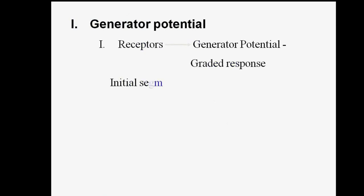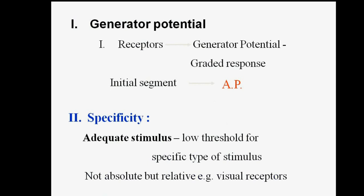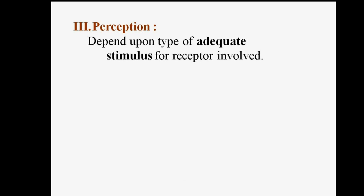Looking at the first property — generator potential — the receptor acts as a generator of potential. Regarding specificity, receptors have the basic property that they require an adequate stimulus, meaning a low threshold for a specific type of stimulus. These are not absolute but relative. For example, these are visual receptors. Perception depends upon the type of adequate stimulus for the receptor involved.